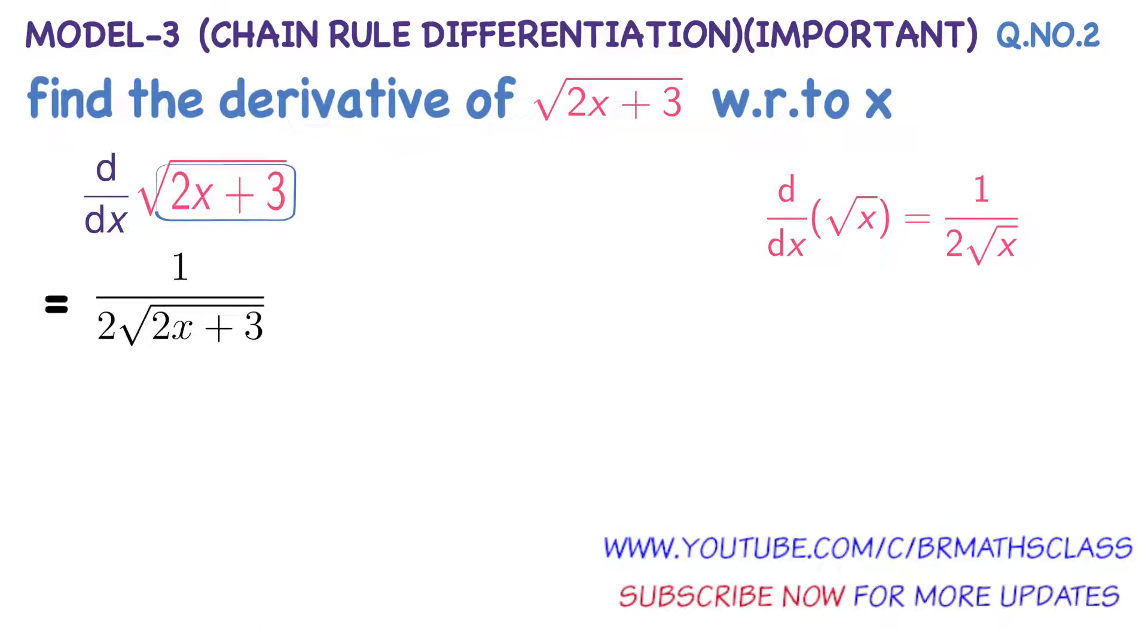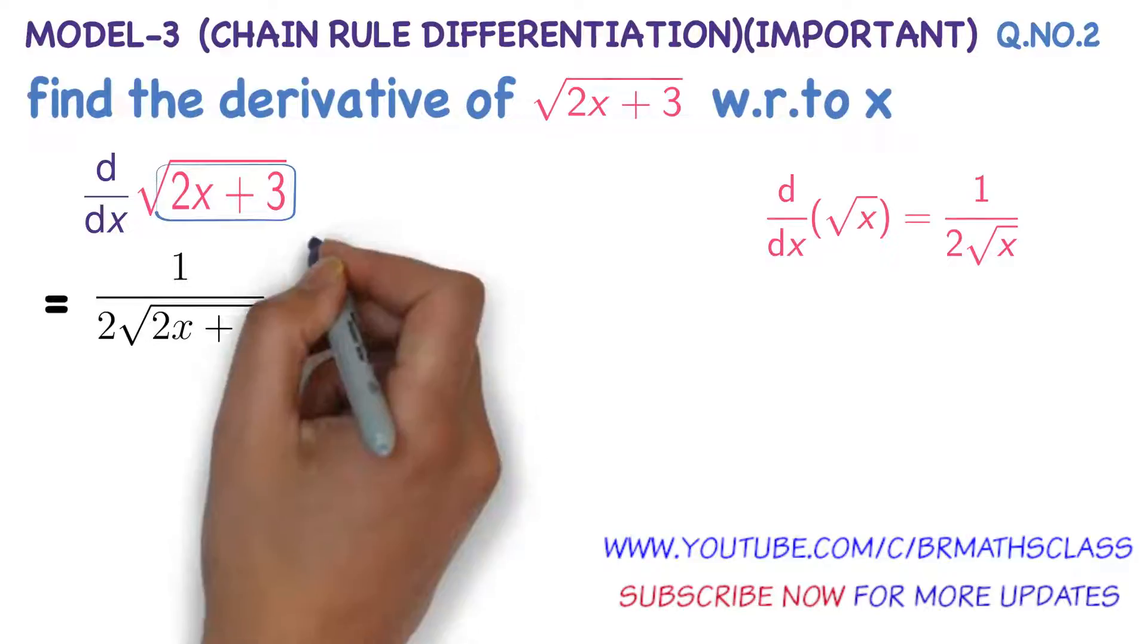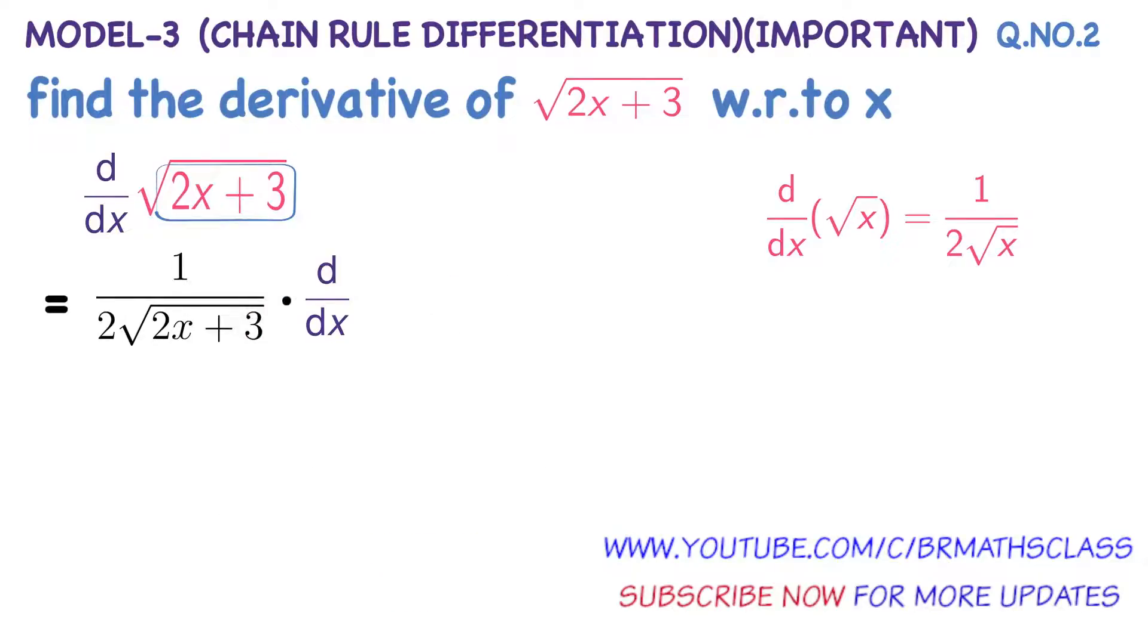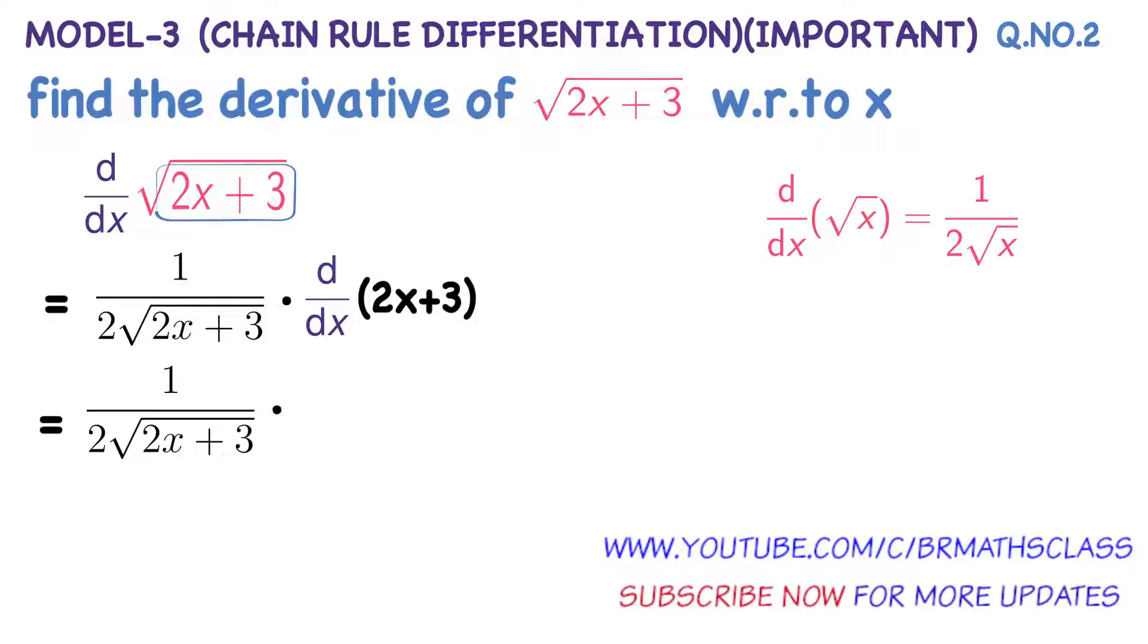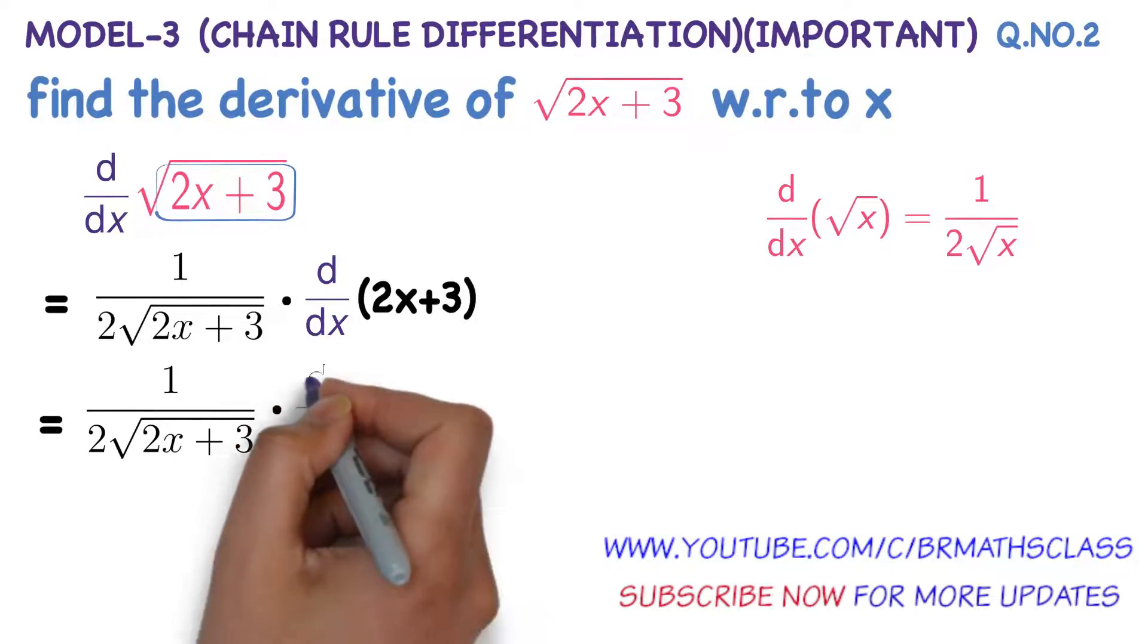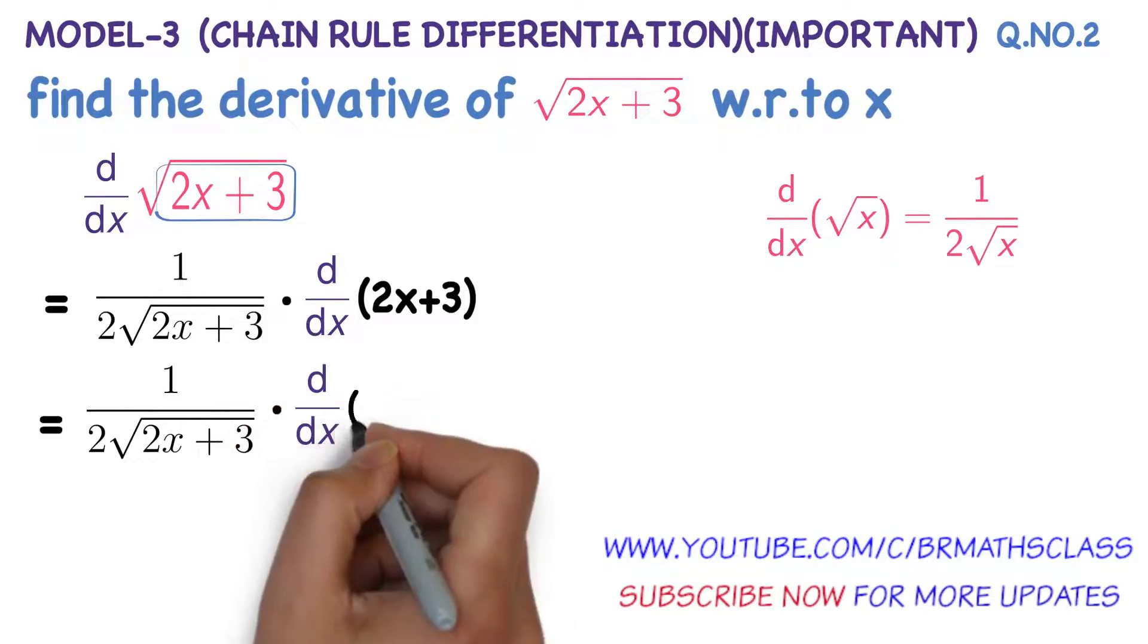So derivative of root over 2x plus 3 is 1 divided by 2 into root over 2x plus 3 into derivative of which one you imagined as x? You imagined 2x plus 3 as x. So you need to differentiate 2x plus 3. That equals to 1 divided by 2 into square root of 2x plus 3 into derivative of 2x plus 3.